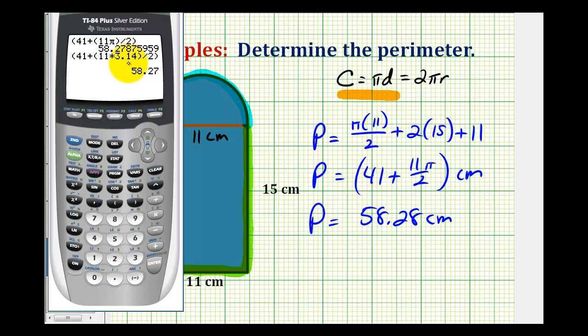So notice how the answer is a little bit less because if we use a rounded value for pi before we do the calculations, it is going to result in more of an error. So just be sure you read the directions carefully when using pi for a calculation.